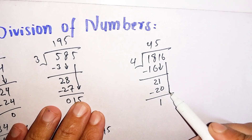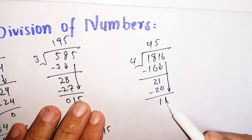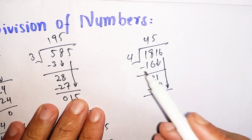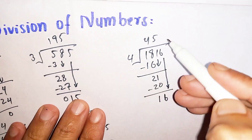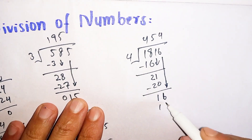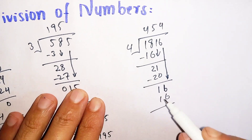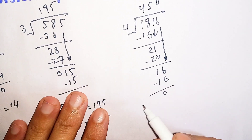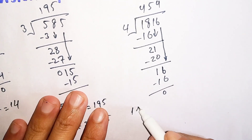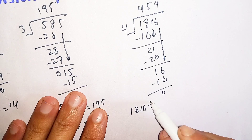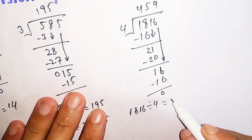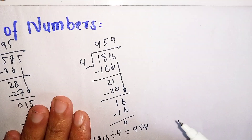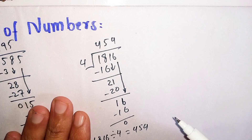down the 6 near 1, which becomes 16. How many times does 4 go into 16? 4 times 4 is 16. Subtract 16 from 16, the remainder is 0. So we can say that 1816 divided by 4 is equal to 454.